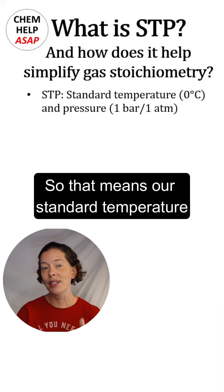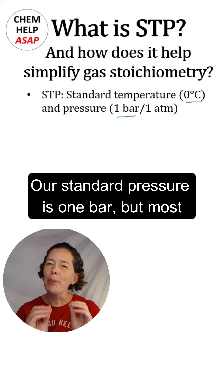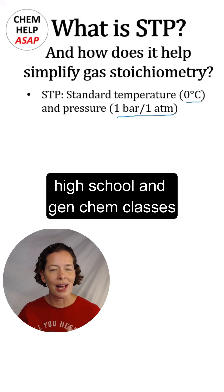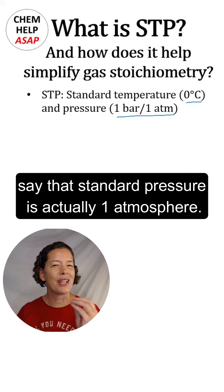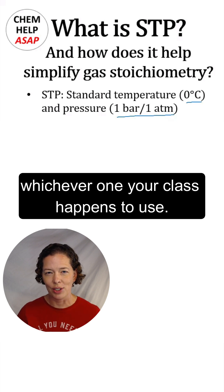That means our standard temperature is zero degrees Celsius or 273K. Our standard pressure is one bar, but most high school and gen chem classes say that standard pressure is actually one atmosphere. They're very close, so it's fine whichever one your class happens to use.